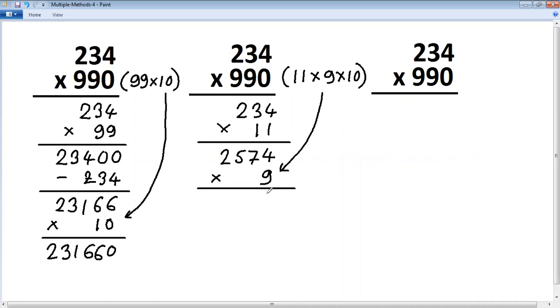9 times 4 is 36, 6 carry 3. 9 times 7 is 63 plus 3 is 66, so 6 carry 6. 9 times 5 is 45 plus 6 is 51, so 1 carry 5. 9 times 2 is 18 plus 5 is 23.